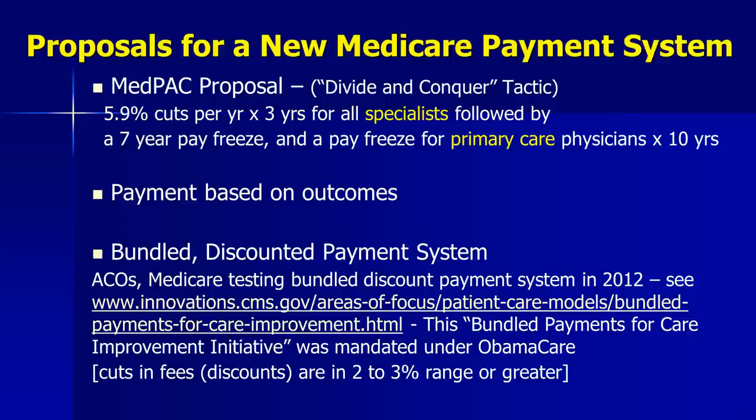There's also payment based on outcomes, where pay-for-performance has morphed into payments for outcomes. Then there's the bundled discounted payment system. As a result of the Affordable Care Act, Medicare is implementing — beginning in 2012 — the Bundled Payments for Care Improvement Initiative, where Medicare payments are bundled into a single payment sent to a hospital, and the hospital determines how much to provide to the physicians. Discounts are usually in the 2–3% range or greater.